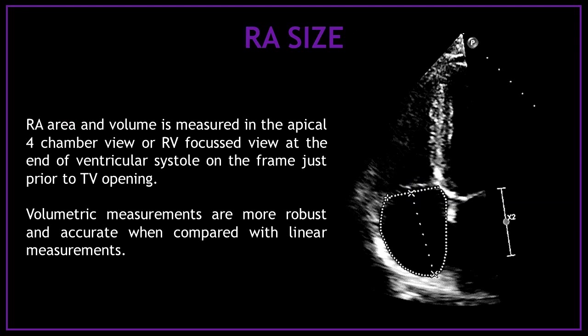The right atrial area and volume is measured in the apical four-chamber view or right ventricular focus view at the end of ventricular systole, on the frame just prior to the tricuspid valve opening. Volumetric measurements are more robust and accurate when compared with linear measurements, which is why it is better to measure the area and volume of the right atrium directly when performing an echocardiogram.